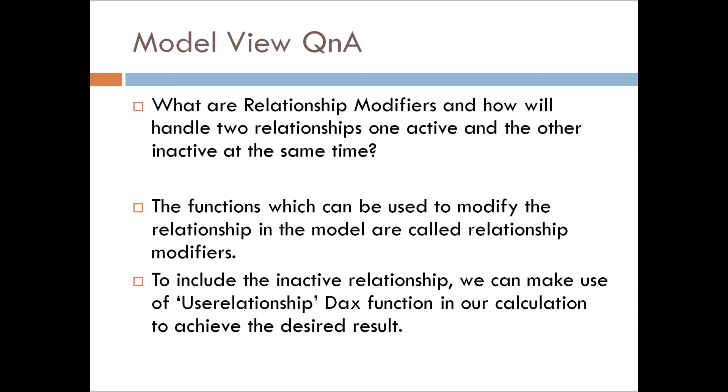The functions which can be used to modify the relationship in the model are called relationship modifiers. Sometimes it happens that when two tables are connected, we have multiple relations between those two tables, and as you know we can only have one active relationship at a time. So suppose if you want to use that second inactive relationship, what can be done? For that, we can use USERELATIONSHIP DAX function in our calculation to achieve the desired result.